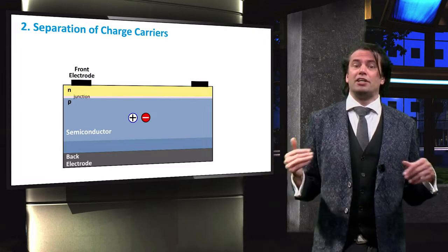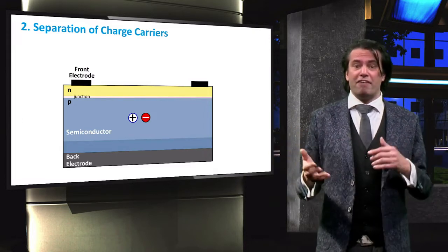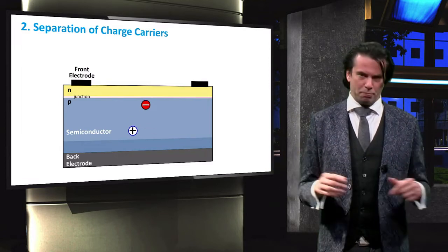Therefore the solar cell needs to be designed so that the mobile charge carrier eventually hit those barriers and are separated.